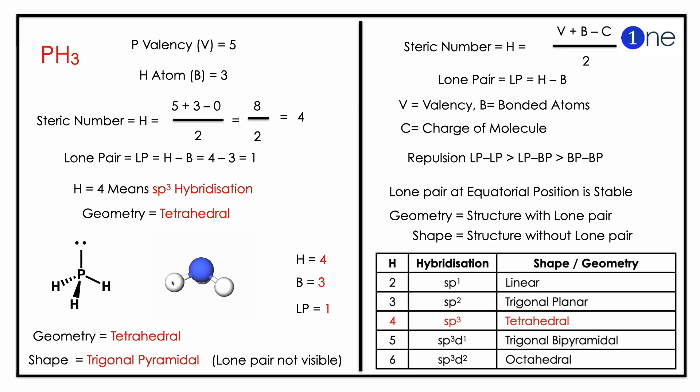8 divided by 2 gives 4, so 4 means sp3 hybridization with tetrahedral shape.